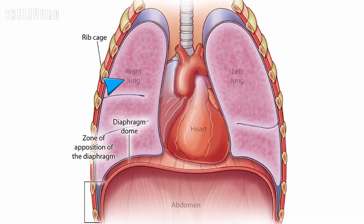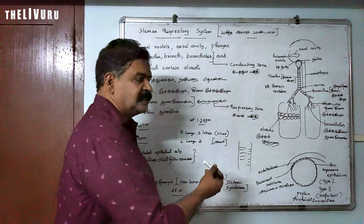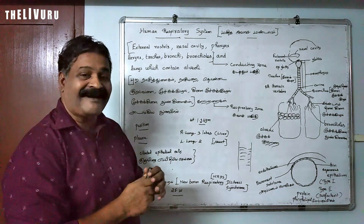This is the lung — here is the right lung and here is the left lung. The right lung has 3 lobes and the left lung has 2 lobes. The left lung is slightly smaller because there is a space for the heart on the left side.